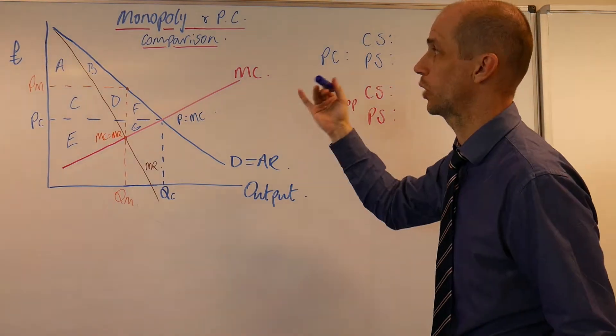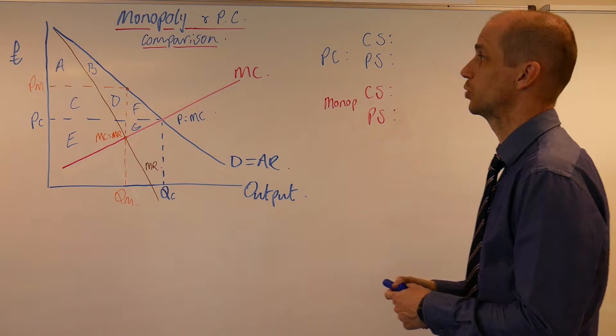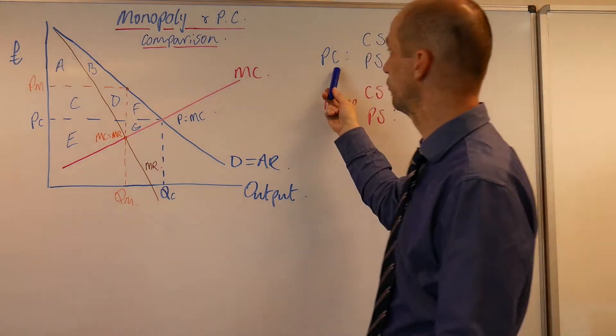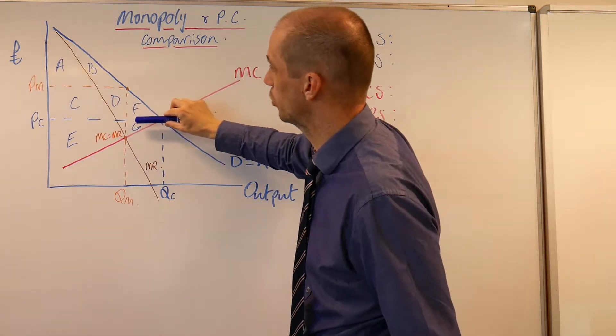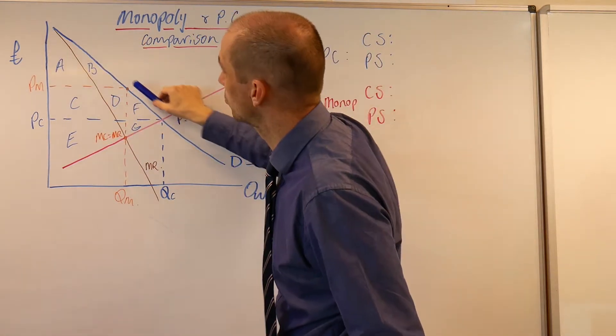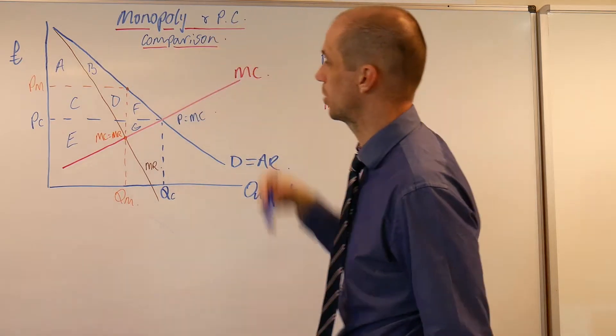Let's do a quick assessment of consumer surplus and producer surplus within this diagram, starting with the competitive marketplace. We can see the price level, and the demand or marginal benefit exceeds the price level right down to where